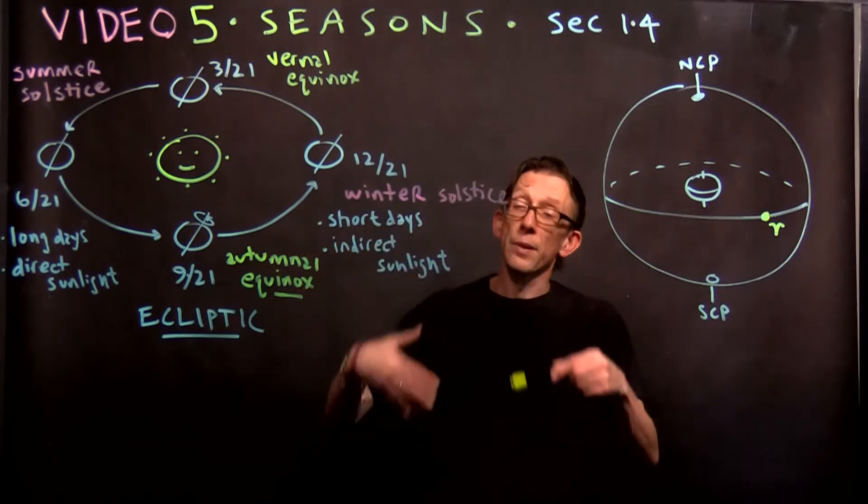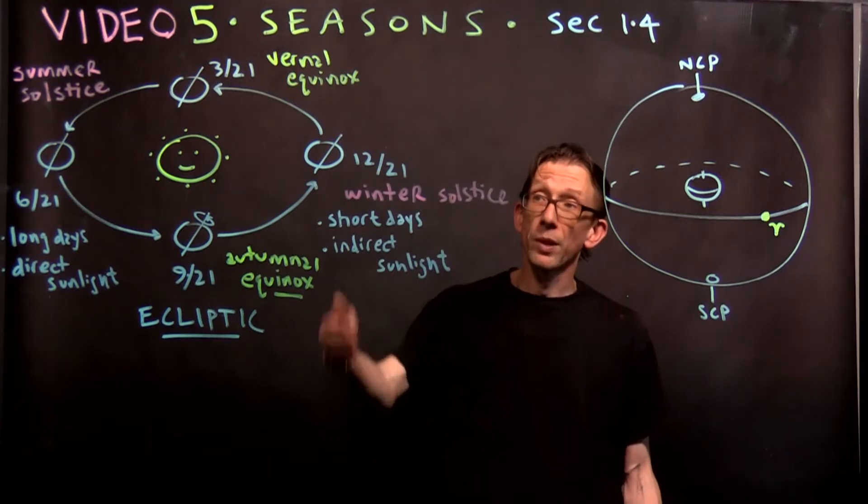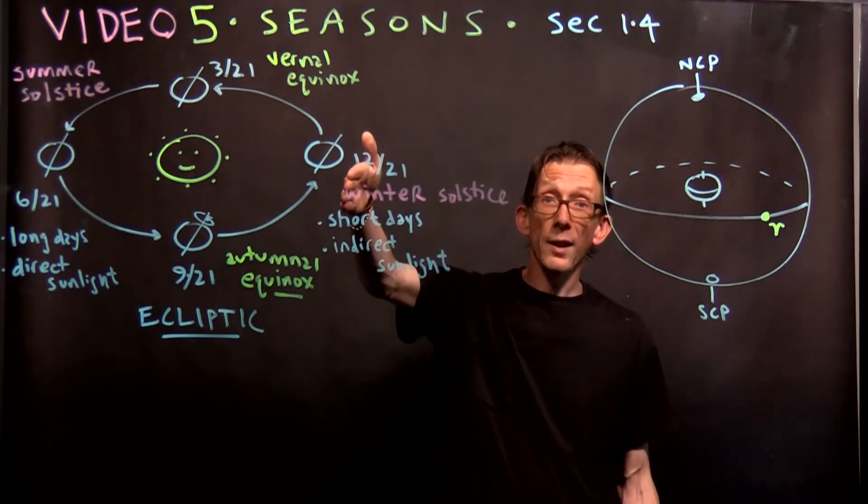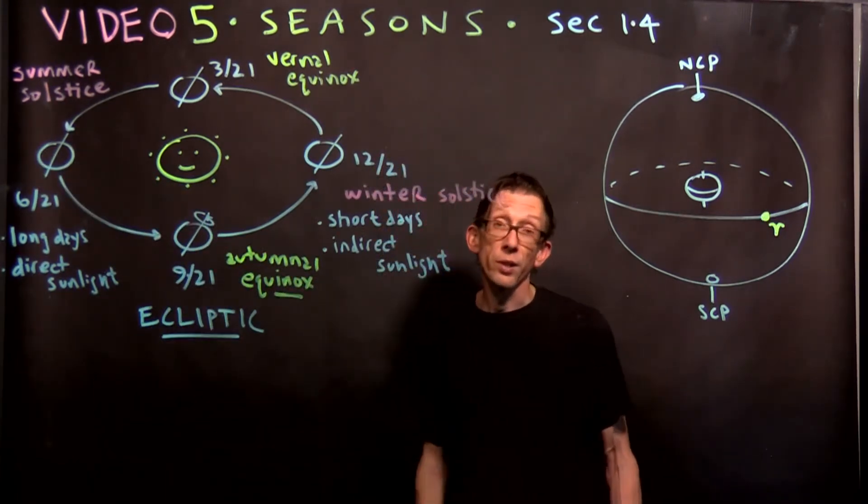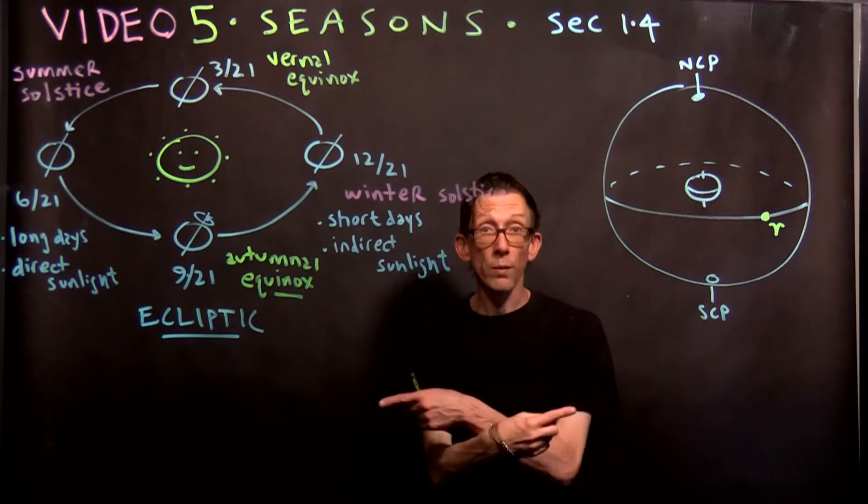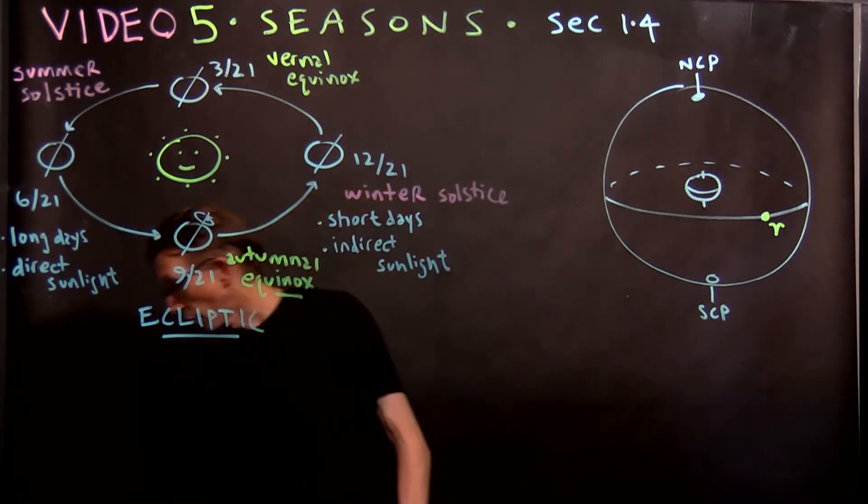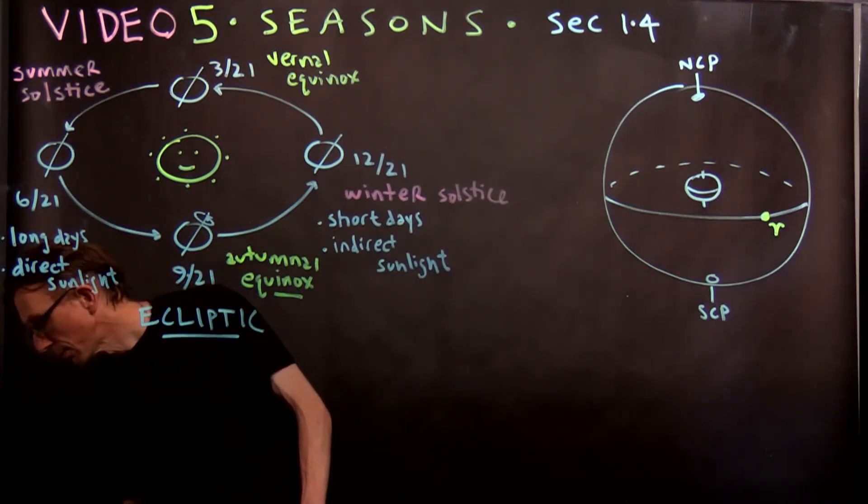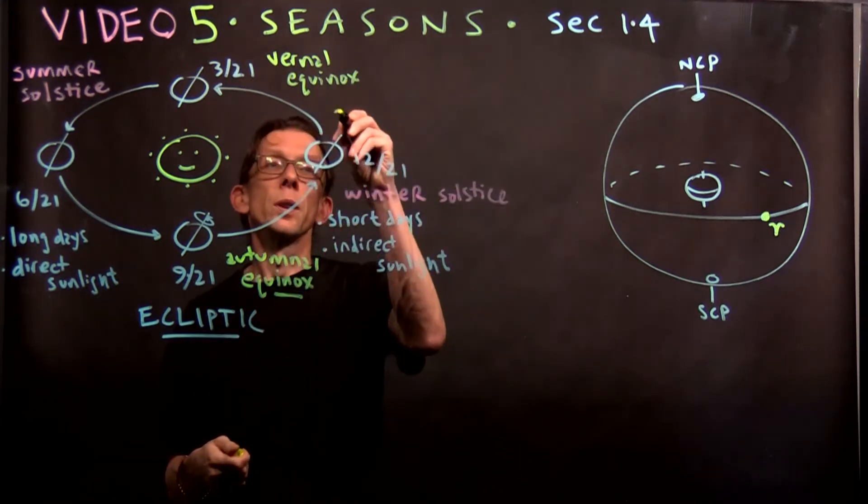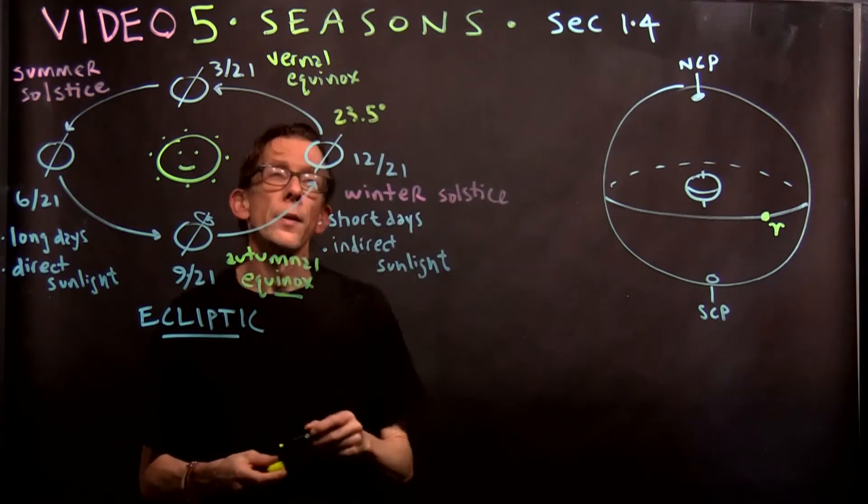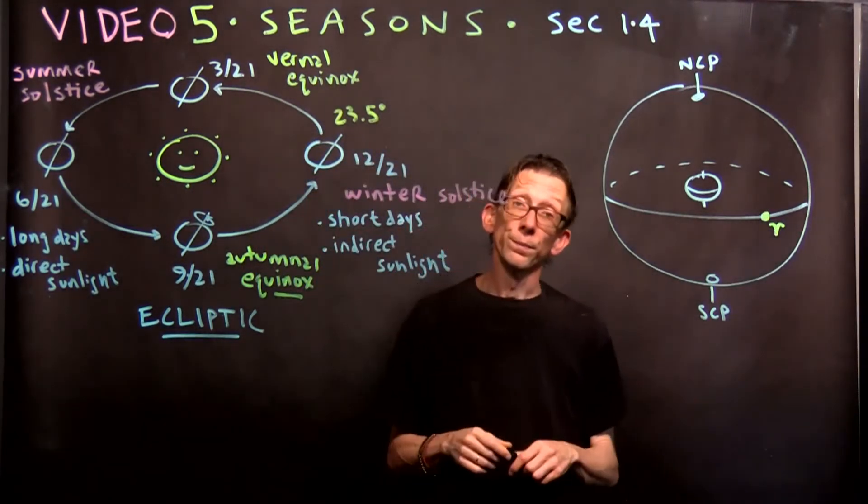And of course, all this is opposite for the southern hemisphere. December is the warmest time of year. December is the longest day, shortest night in the southern hemisphere. June is the shortest day, longest night. So the seasons are reversed in the southern hemisphere. That's what creates the seasons. And this tilt from vertical is 23.5 degrees. So 23 degrees plus a little more. That tilt.